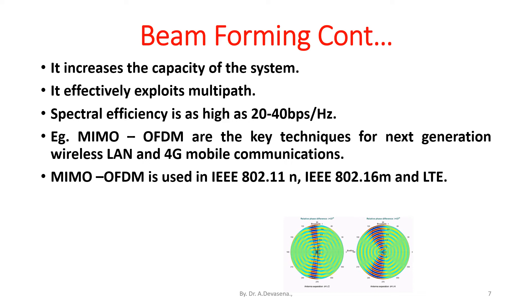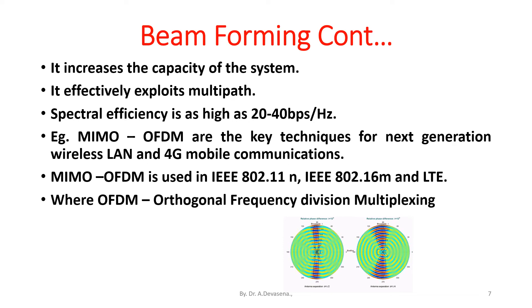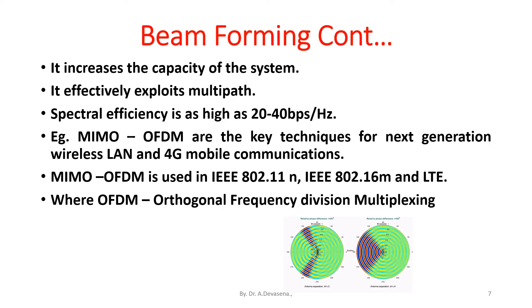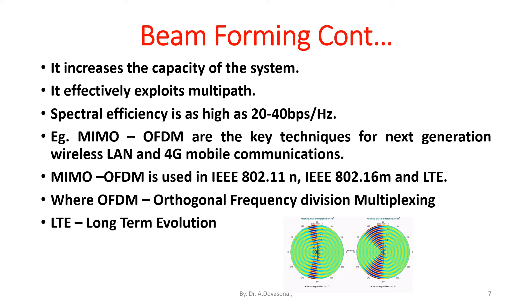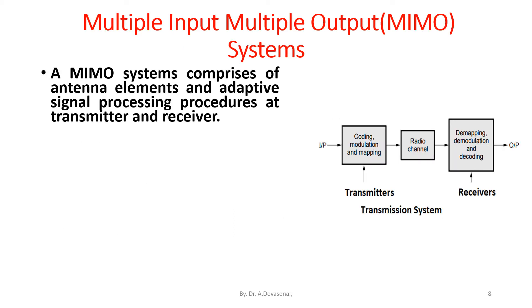MIMO OFDM are the key techniques for next generation wireless LAN and 4G mobile communications. MIMO OFDM is used in IEEE 802.11n, IEEE 802.16m, and LTE, where OFDM represents orthogonal frequency division multiplexing and LTE represents long term evolution.